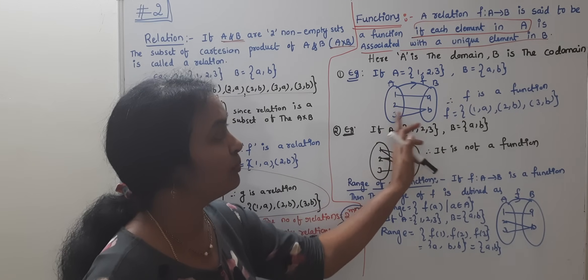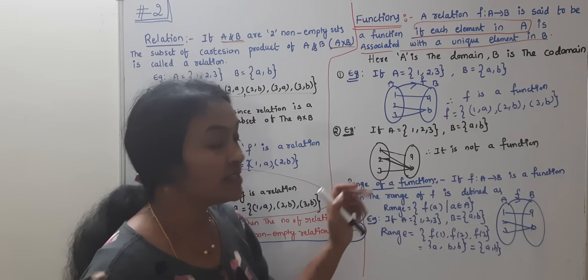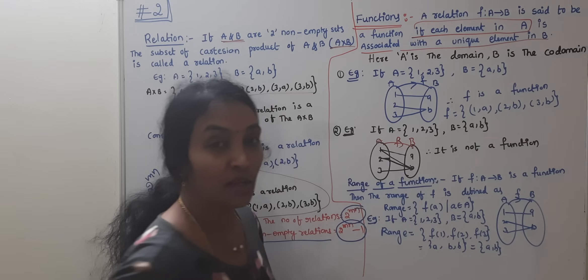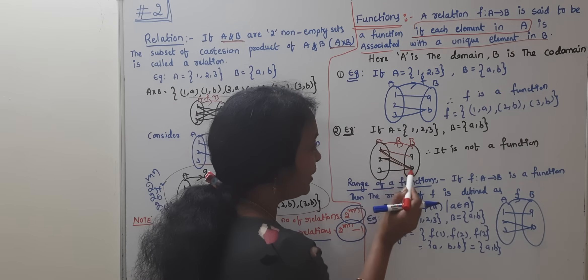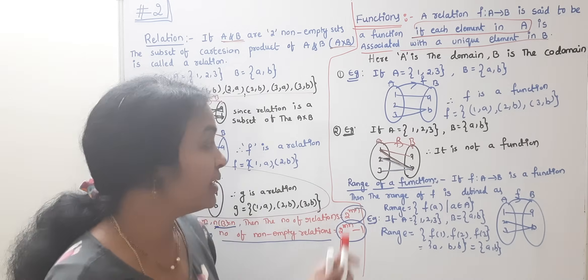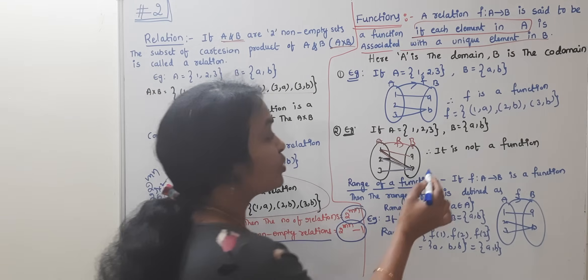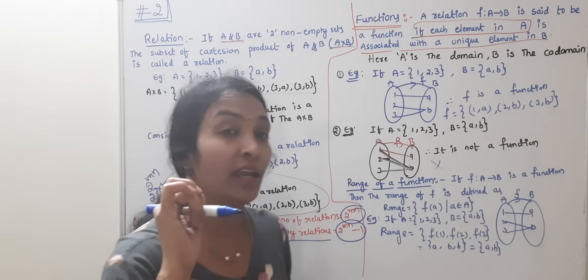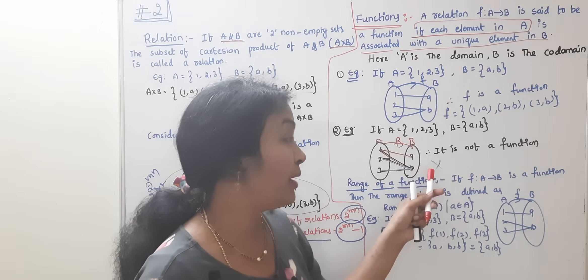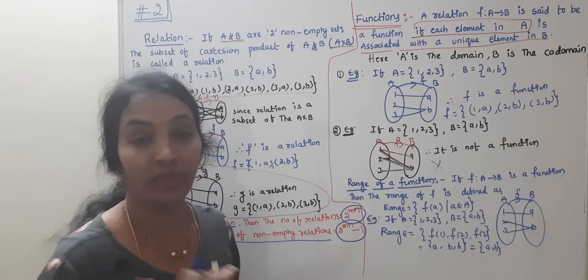This is a function. Now, let's look at an example. If you consider A and B, is it a function? Here we have A and B, the relation is f. 1 is mapped to A, 1 is also mapped to B, 2 is mapped to B, 3 is mapped to B. Elements 2 and 3 are fine - mapped with at least one element. But 1 is mapped with two elements in B. This is not a function.